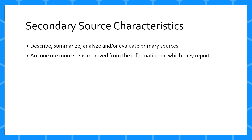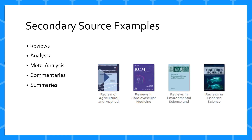Secondary sources describe, summarize, analyze, and/or evaluate primary sources. They are one or more steps removed from the information on which they are reporting. The main example of a secondary source is the review article, which summarizes the current research on a particular topic. Some review articles, such as systematic reviews or meta-analyses, use a more focused, reproducible approach to gather and analyze the primary sources used in the review.